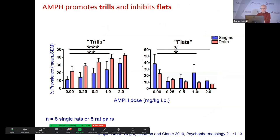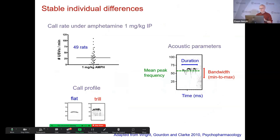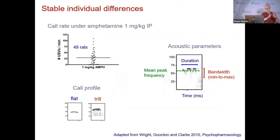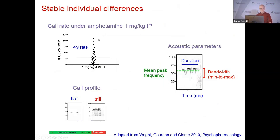In the same experiment, we were testing the effects of amphetamine. Amphetamine dose-dependently increased trills both in singly and pair-tested animals, and produced a reduction in flats. So we've got two conditions — social and drug — and in both cases, pair-testing and amphetamine increased trills and reduced flats. Another striking thing is that if you take a whole bunch of animals and give them a dose of amphetamine, their call rate varies very greatly, and this isn't random variation — we know now that it represents consistent individual differences.